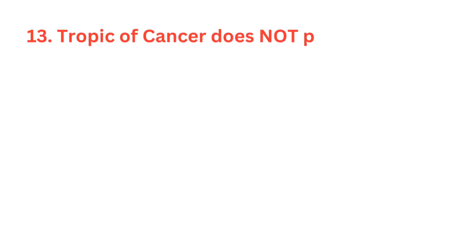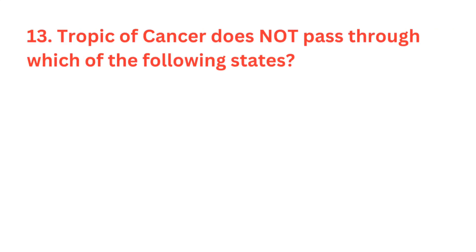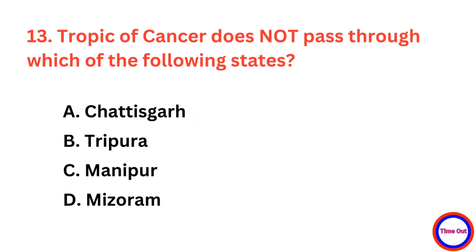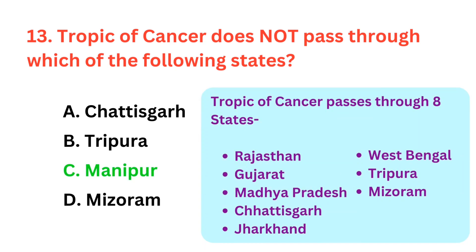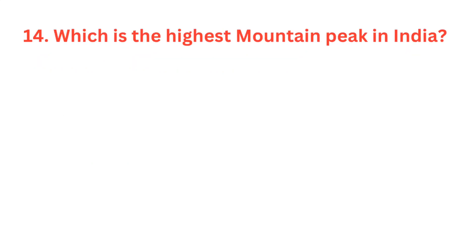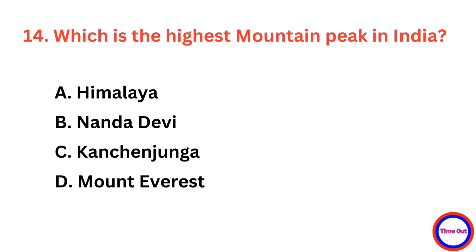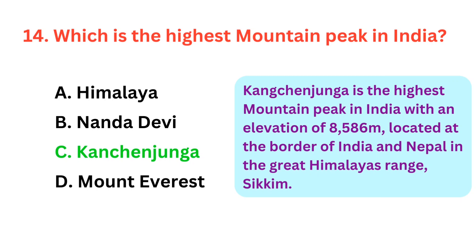Tropic of Cancer does not pass through which of the following states? The correct answer is option C, Manipur. Which is the highest mountain peak in India? The correct answer is option C, Kanchanjunga.